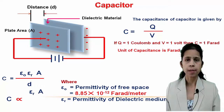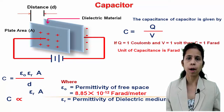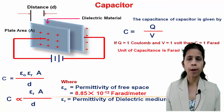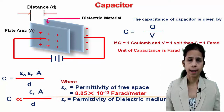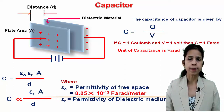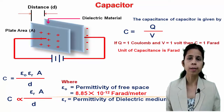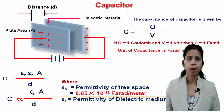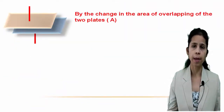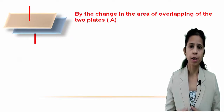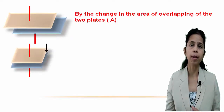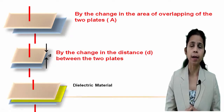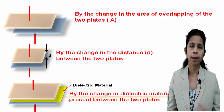Here, A is the area of the plate and D is the distance between the plates. ε₀, the permittivity of free space, is constant. Capacitance is proportional to εᵣ, the permittivity of dielectric material, and to A, the overlapping area of the plates, and inversely proportional to the distance between the plates. Capacitance can be changed by varying these three parameters: the overlapping area, the distance D, or the dielectric material.